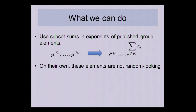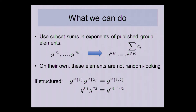You can tell because if they're structured, then g^(a_1) · g^(a_2) equals g^(a_{1,2}), just because of this relation. You could easily check this and distinguish the structured version from the random version — if the elements were random, they would not satisfy this relation.